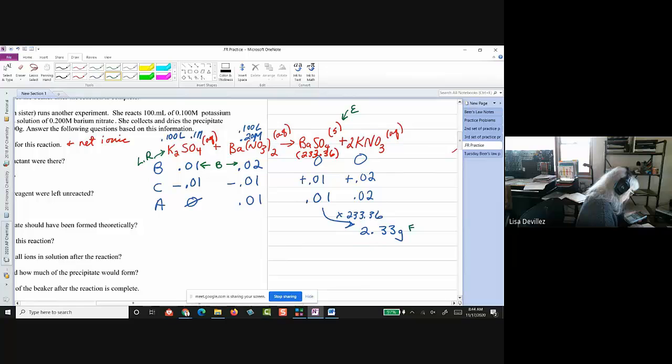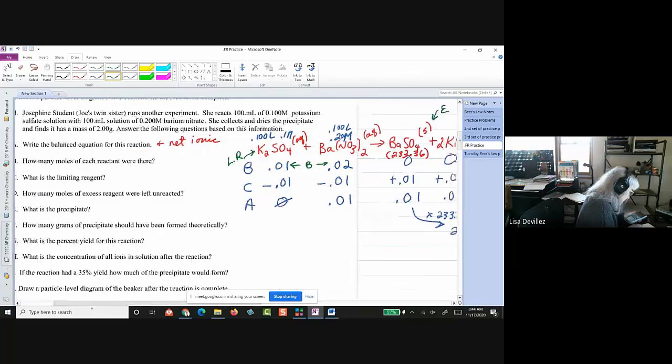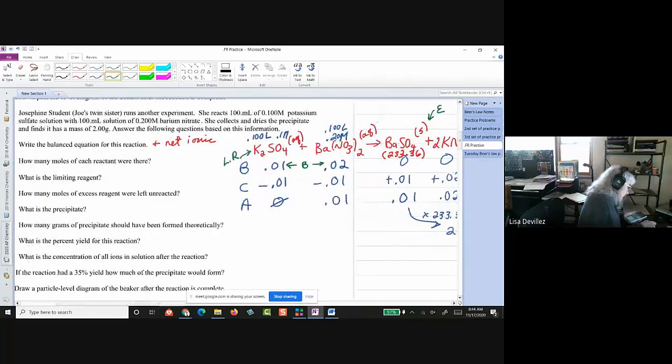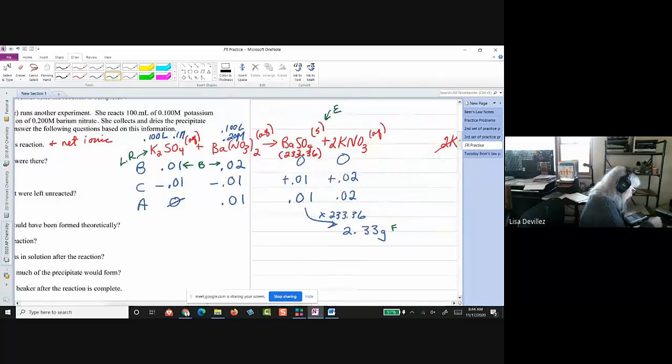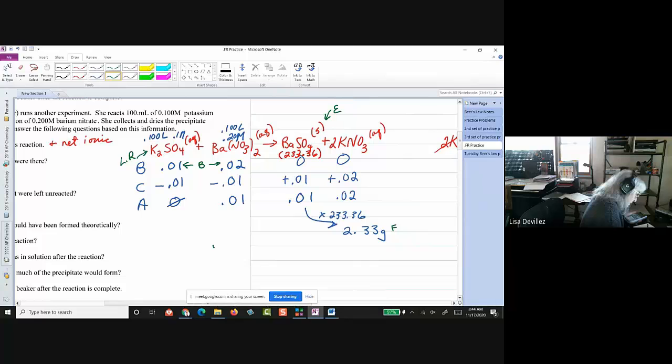Okay. Then, wants to know what is the percent yield? And, up here, it said that I recovered 2 grams of the precipitate. So, my percent yield, so this will be for part G.